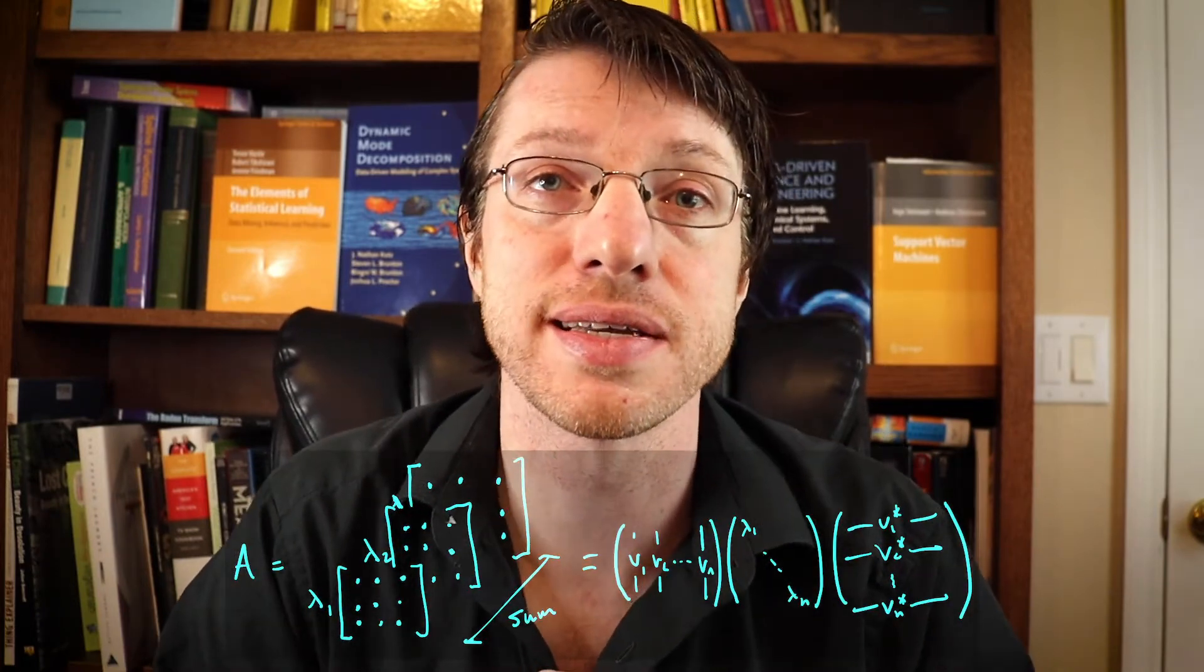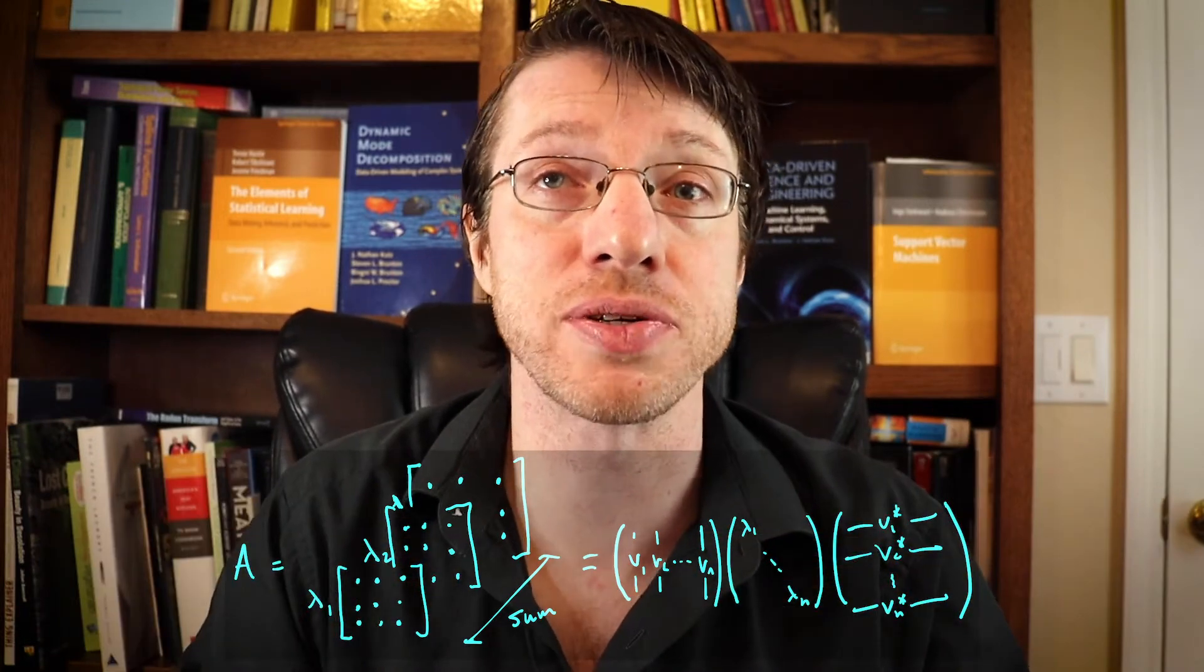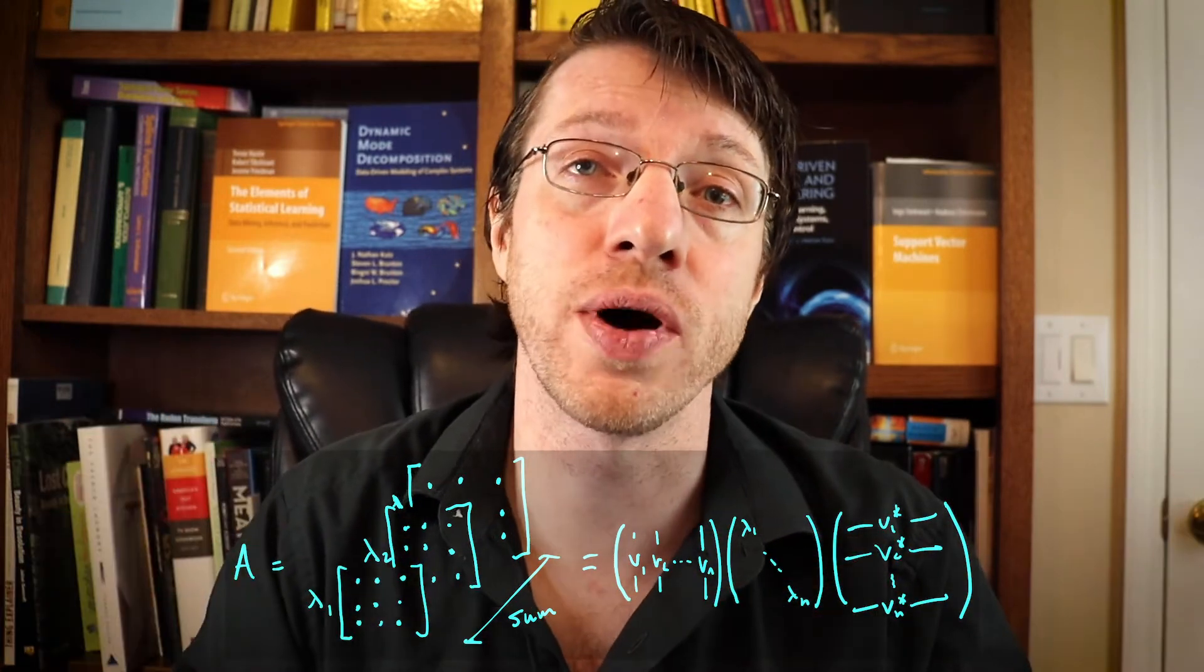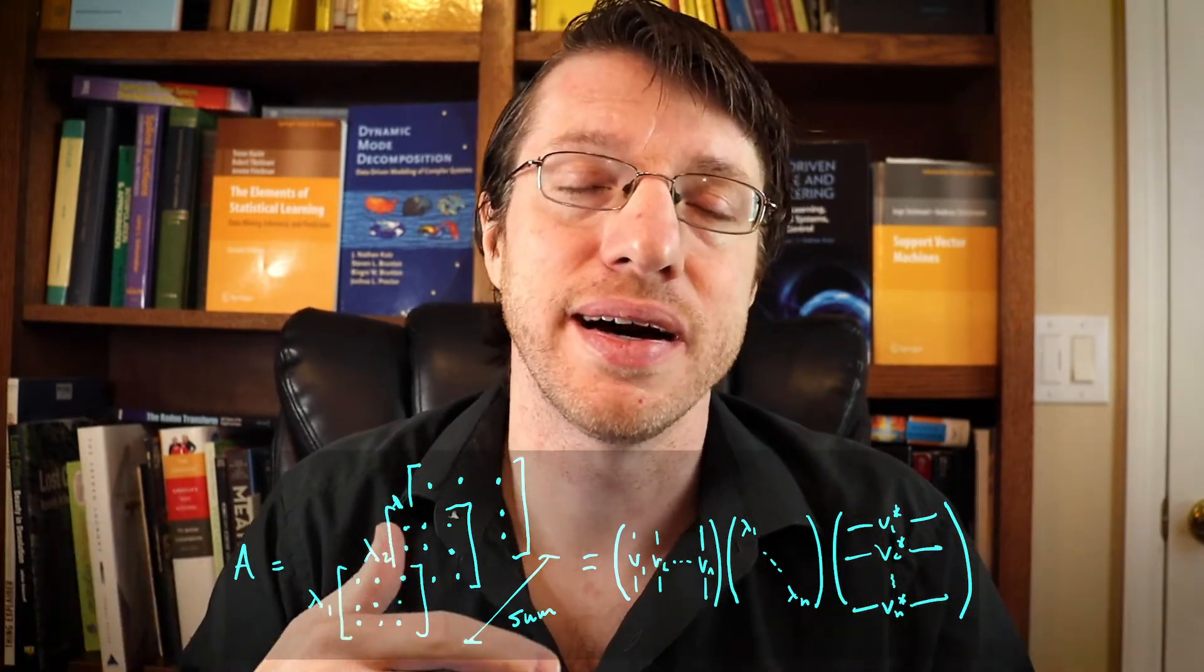And you can continue this decomposition, and this will all ultimately add up to your original vector. And that's what an eigen decomposition does. It breaks down a self-adjoint matrix into a collection of rank one operators. And we'd like to take the same idea and employ it for non-square matrices. So how do we do that?